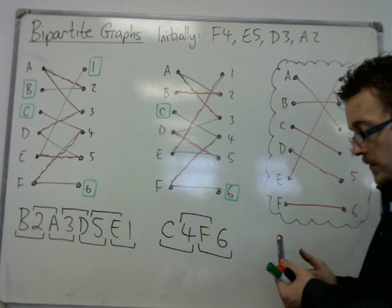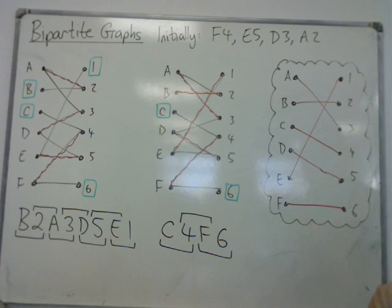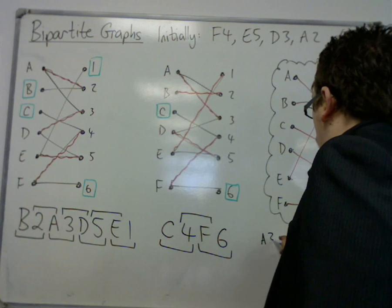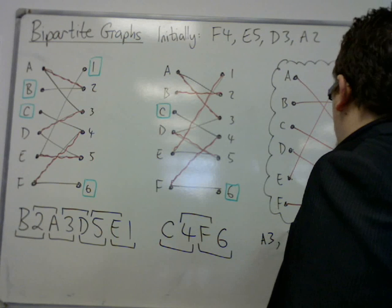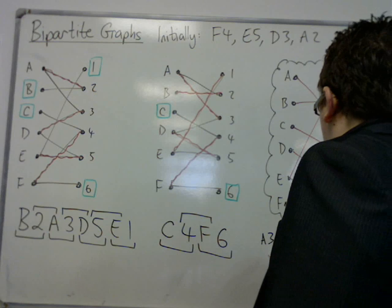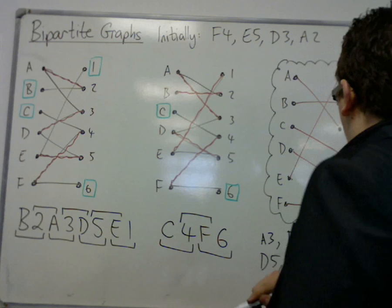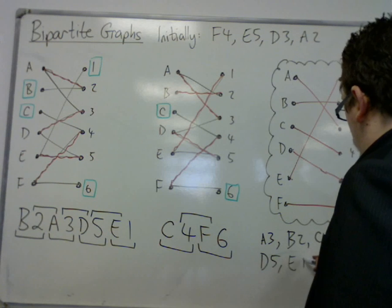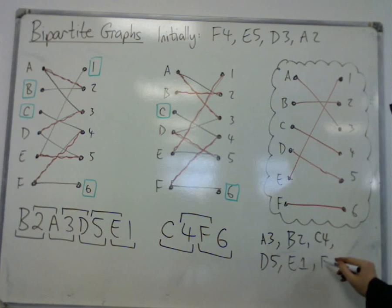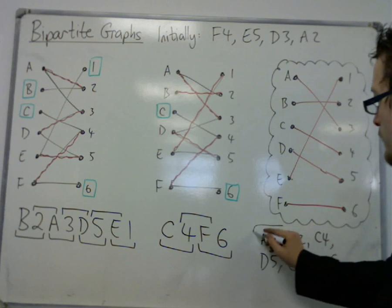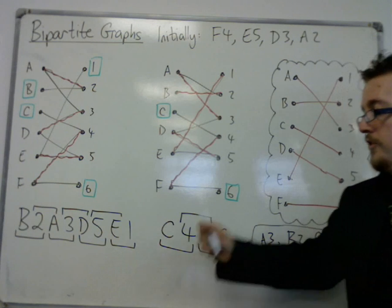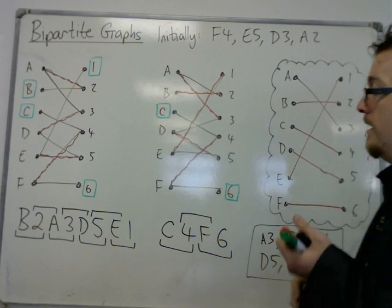This is now a complete final matching. I've got a-3, b-2, c-4, d-5, e-1, and f-6. That is my complete matching that I must write down at the end with my two alternating paths that got me there.